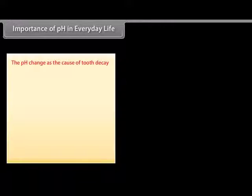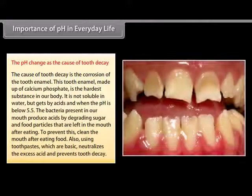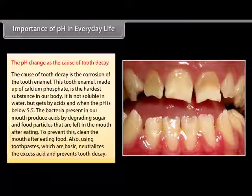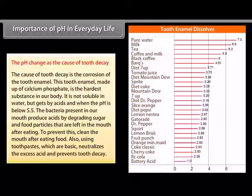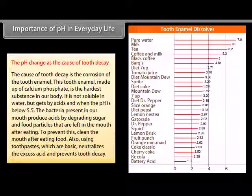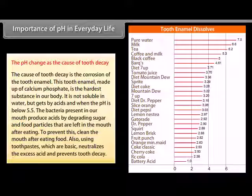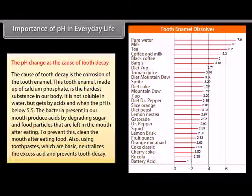The pH change as the cause of tooth decay: The cause of tooth decay is the corrosion of the tooth enamel. This tooth enamel, made up of calcium phosphate, is the hardest substance in our body. It is not soluble in water but gets corroded by acid when the pH is below 5.5. Bacteria in our mouth produce acids by degrading sugar and food particles. To prevent this, clean the mouth after eating. Using toothpastes, which are basic, neutralizes the excess acid and prevents tooth decay.